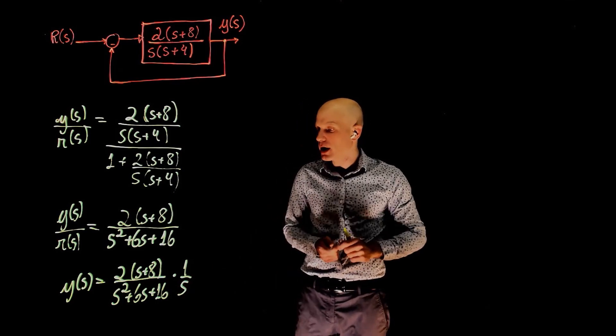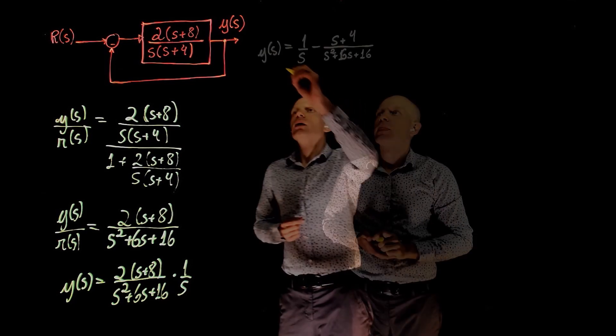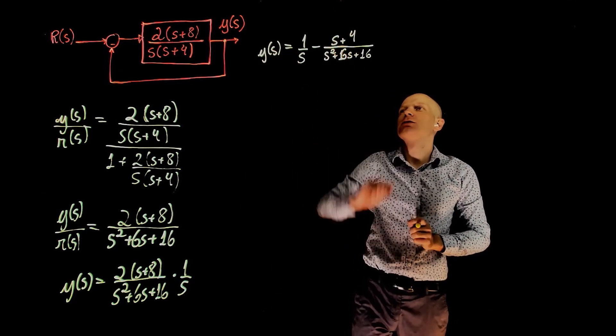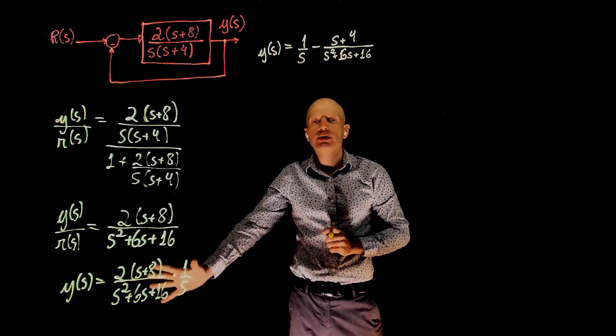We can now solve for a, b, and c, and the results I'm going to write here is 1 over s minus, top here becomes s plus 4. So this is the partial fraction decomposition of this expression.